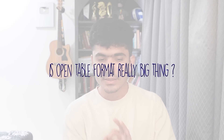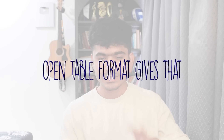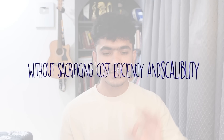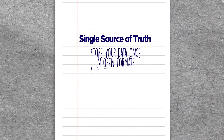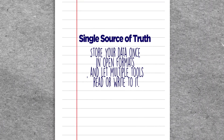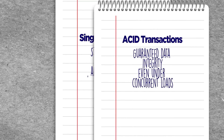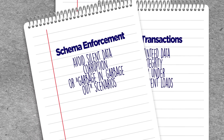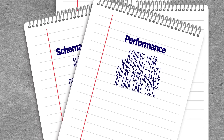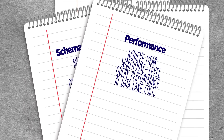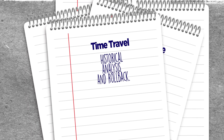The real question is: is open table format really the next big thing? The short answer is yes, because companies need flexibility, they want to scale, and they want an efficient data management system. Open table formats give that. We want data lakes that behave like transactional systems without sacrificing cost efficiency and scalability of cloud storage. Open table formats bring the best of data warehouses and data lakes — offering the best of both worlds. As data grows exponentially, the importance of open table formats will also increase. Key advantages include: single source of truth, schema enforcement to avoid garbage data, near data warehouse level performance, and time travel.